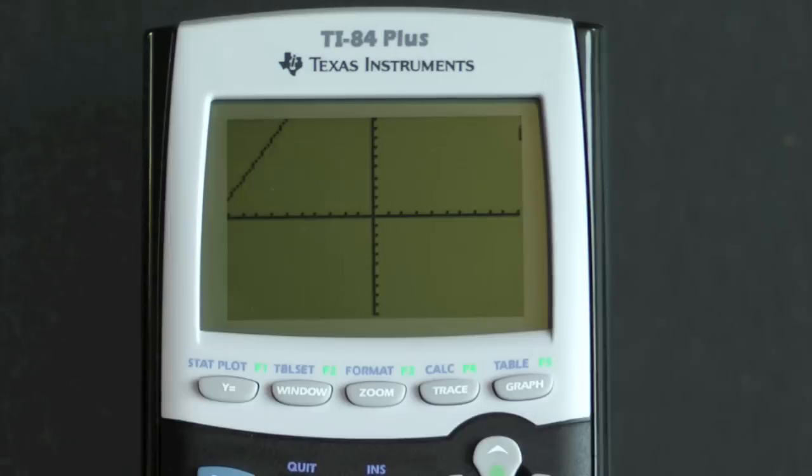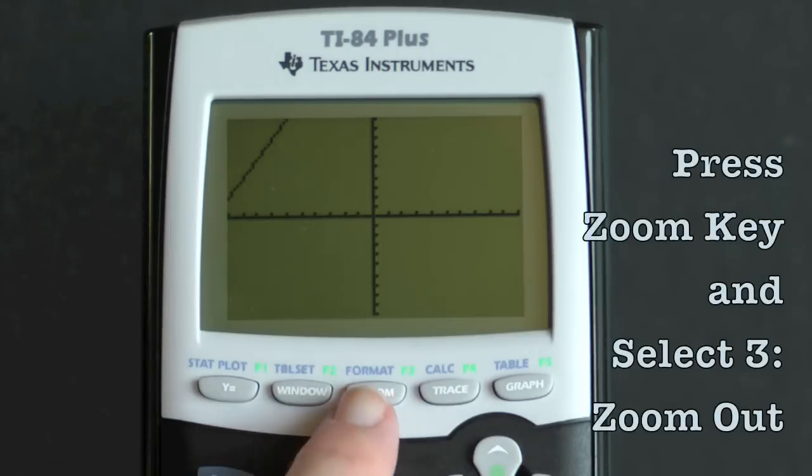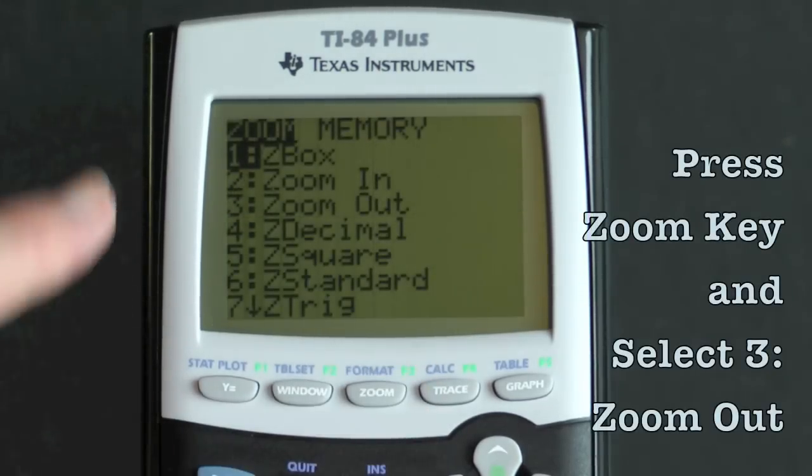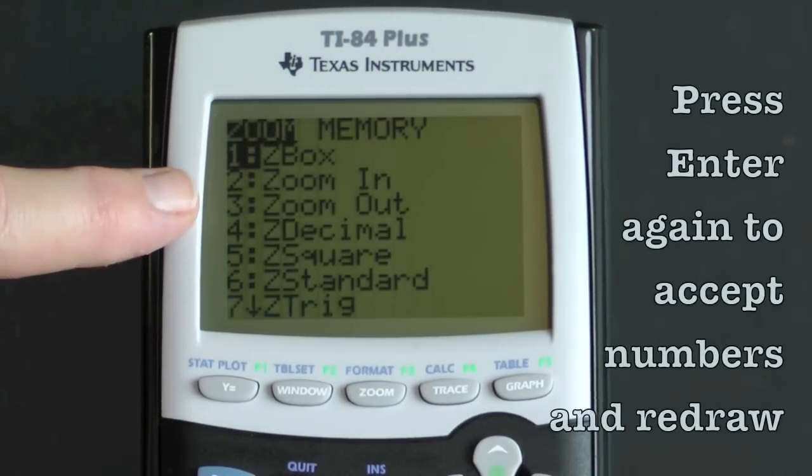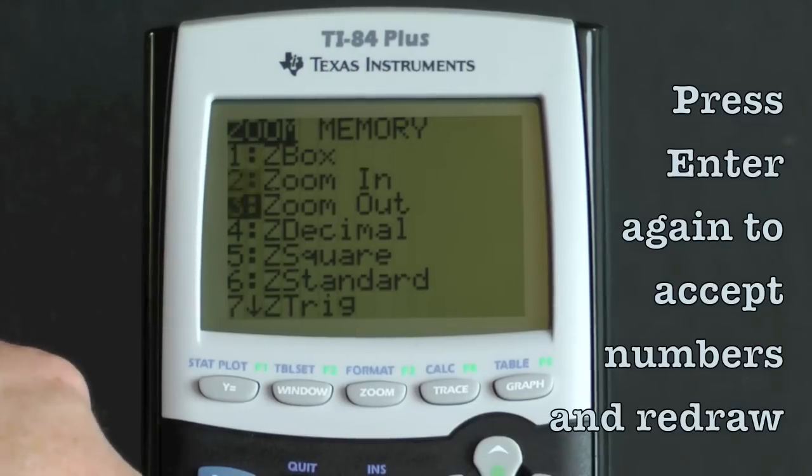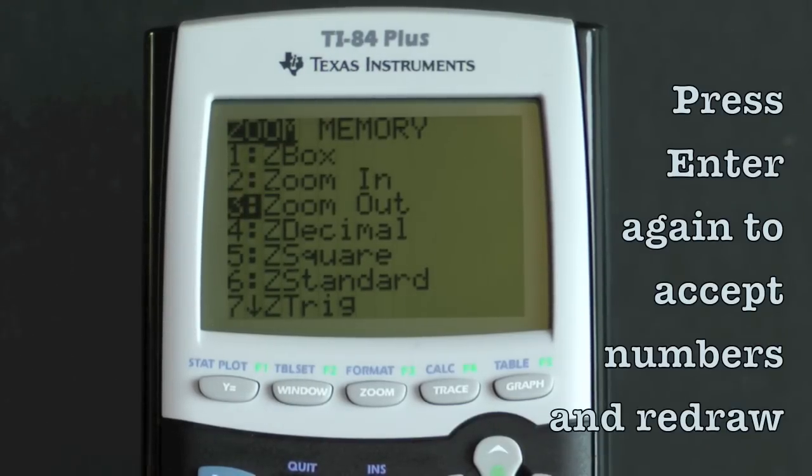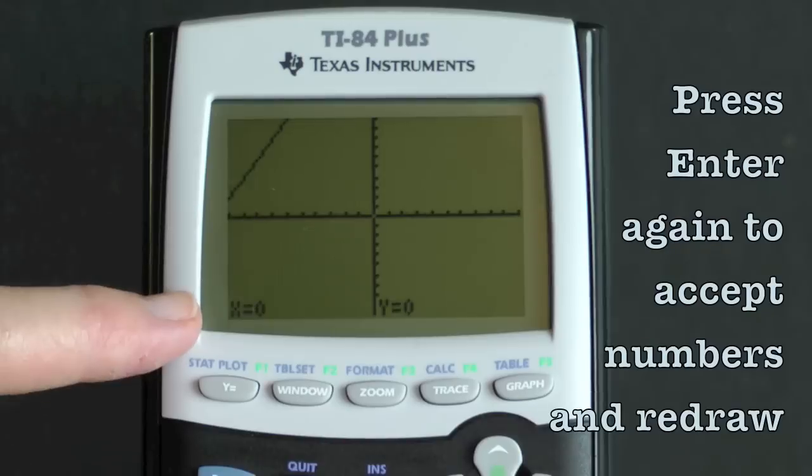Now press the zoom key and select option 3, zoom out. Press enter to select the x and y value that was suggested on the screen and it will regraph the two lines.